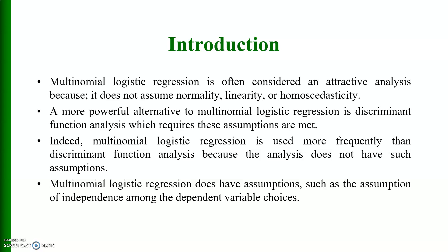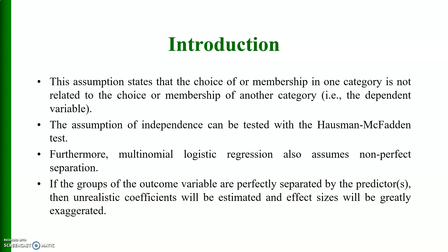Multinomial logistic regression has certain assumptions. For example, the assumption of independence among the dependent variable choices states that the choice or membership in one category is not related to the choice or membership of another category. This assumption can be tested with the Hausman-McFadden test. Furthermore, multinomial logistic regression uses non-perfect separation — if the groups of the outcome variable are perfectly separated by the predictors, then unrealistic coefficients will be estimated and effect sizes will be greatly exaggerated.